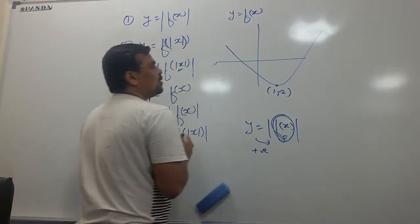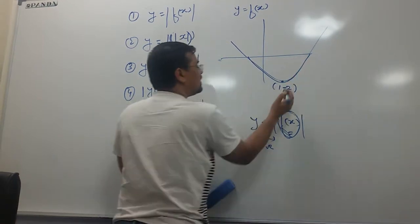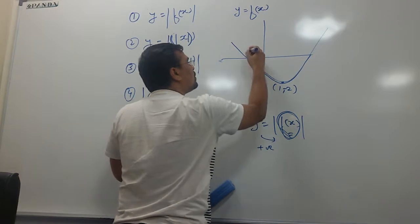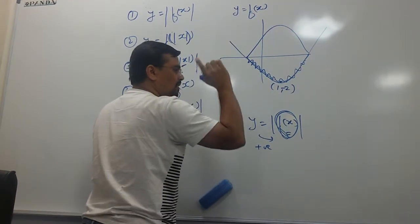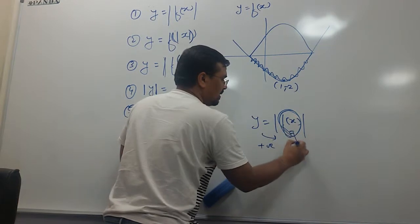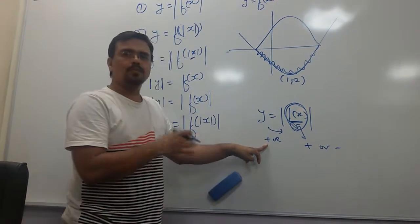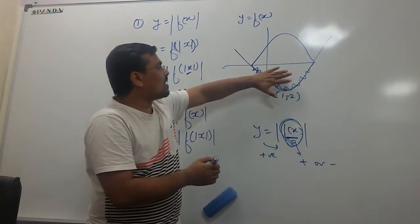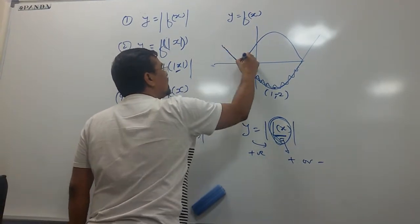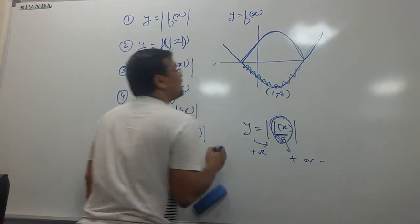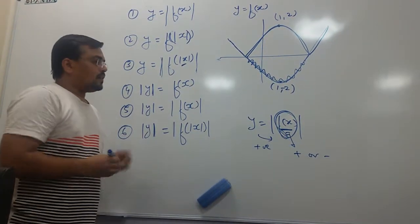So my y would always be positive, which means even for the negative part of f(x), y would become positive. This part which is negative f(x) should go on the other side. Whether f(x) is positive or negative, y would always be positive. So for negative of the function, y has to become positive. The final graph looks like this, and the vertex would be at 1 comma 2.